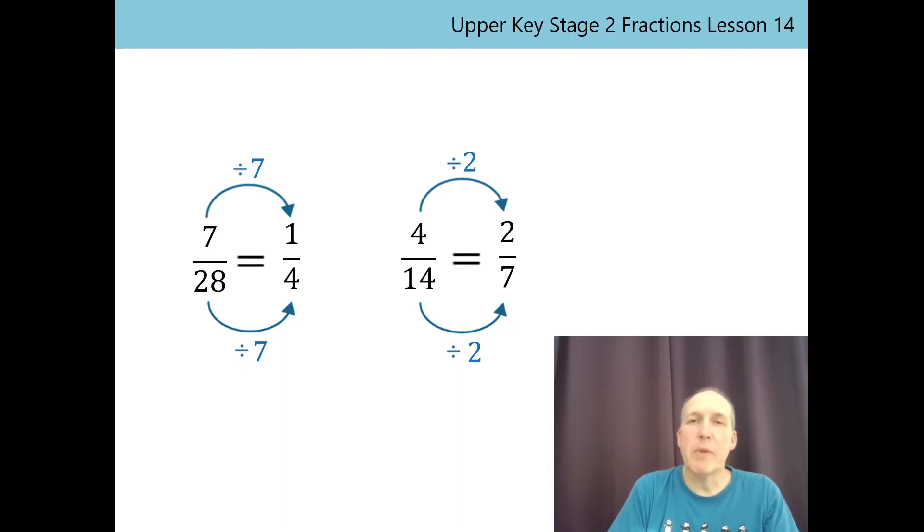Remember that when we simplify 4/14 to 2/7, we're preserving the proportional relationship between the numerator and the denominator. The size of the fraction doesn't change. 4/14 and 2/7 are at the same point on the number line, like we saw in the previous lesson.